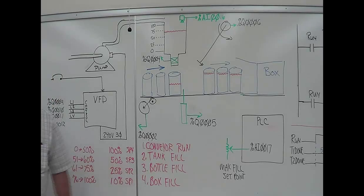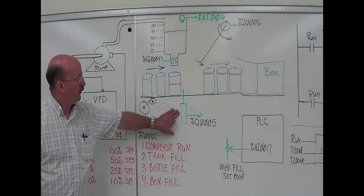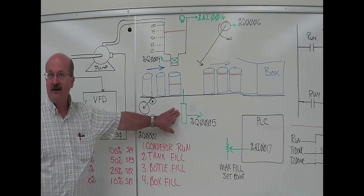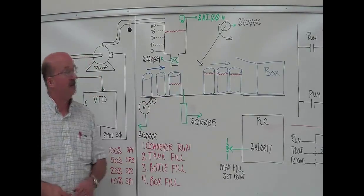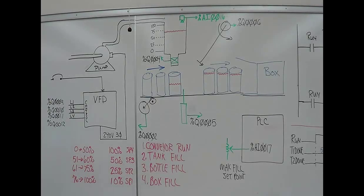Your box fill. Your release valve increments the counter, and then it controls your box filler. So you've got four separate sections. You can work on each one of them separately, get it working, then go on to the next section.